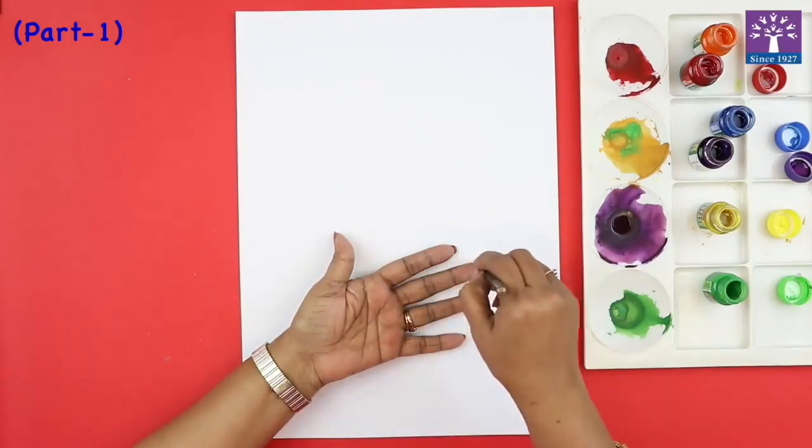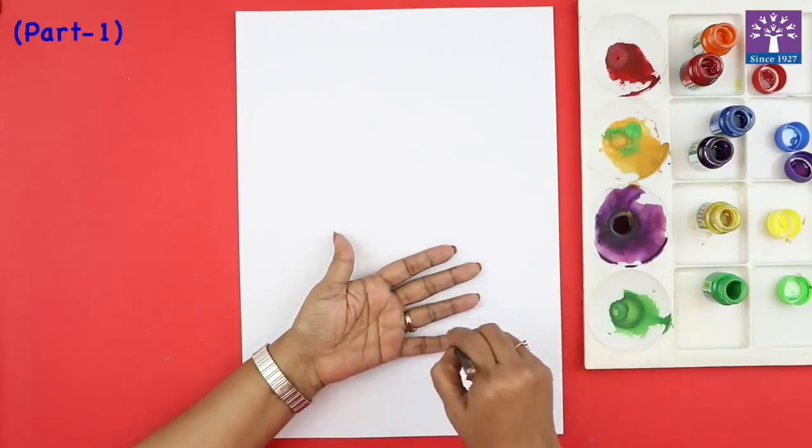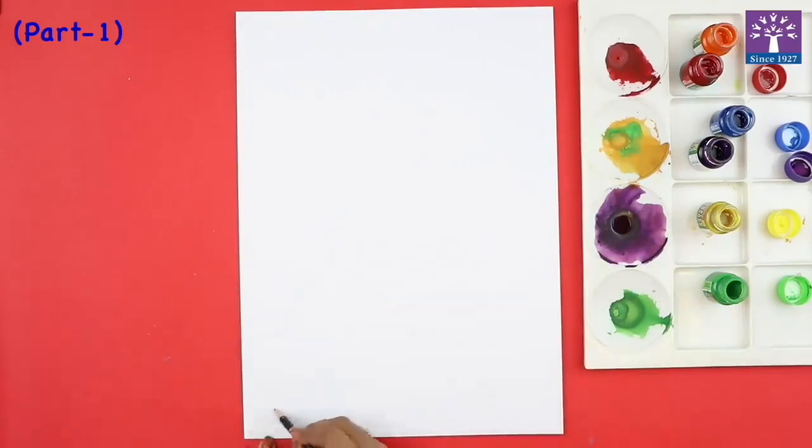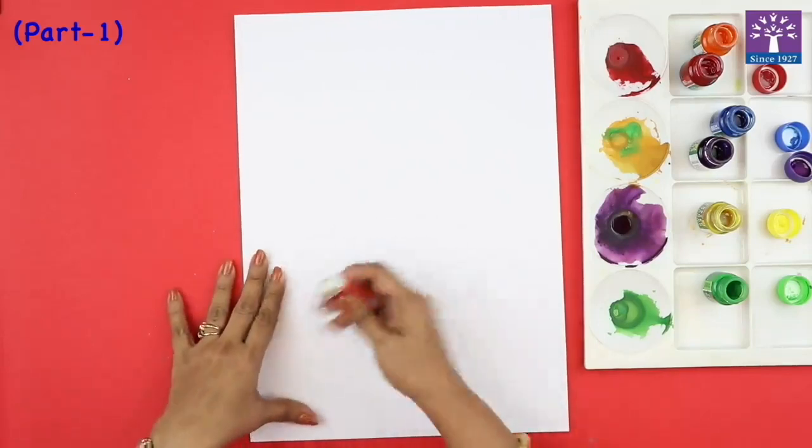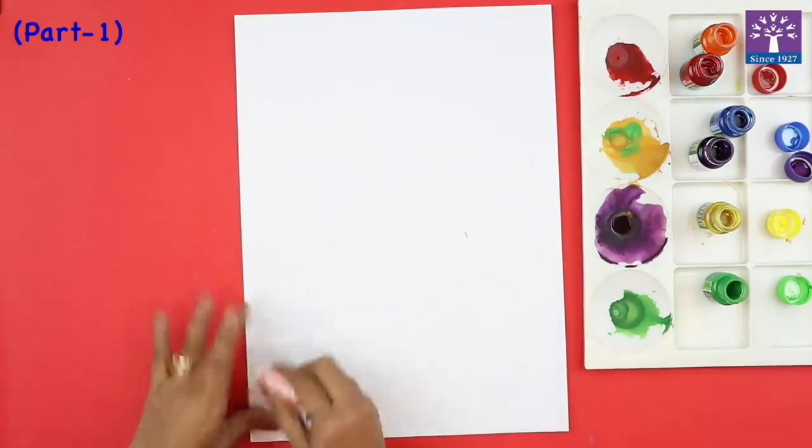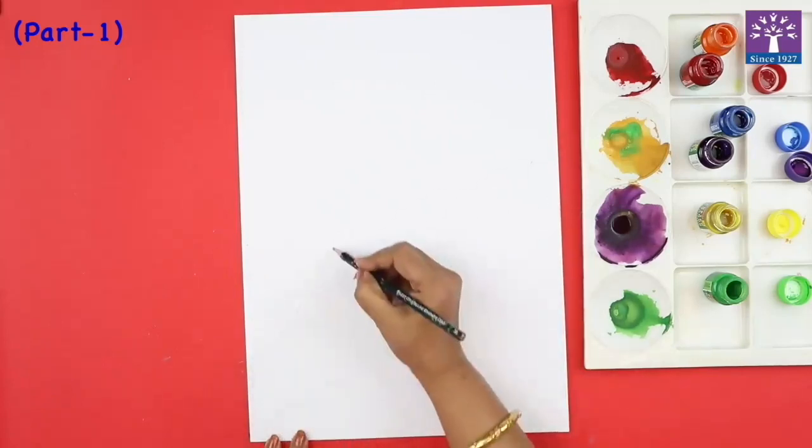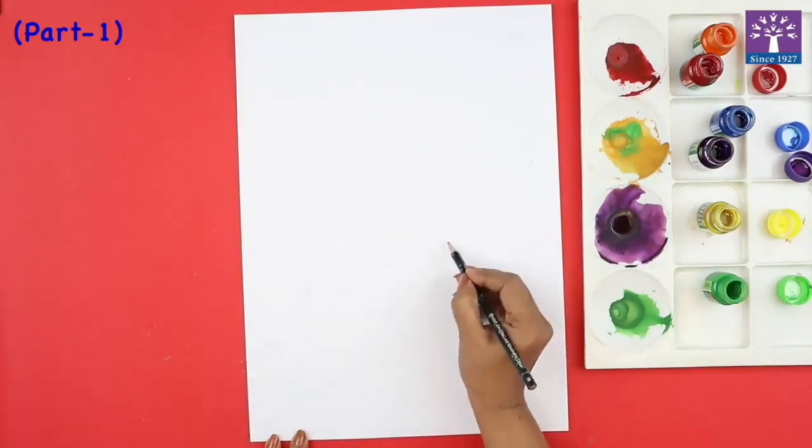Even if the lines are a bit uneven, it is okay. Trace it very lightly and then you can erase it and make it good. So as you can see, my palm has not come very nice. But at least we have a rough idea about how our hand is going to be, and I am going to just slightly define it more.